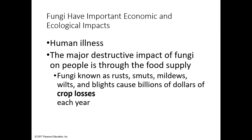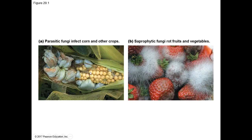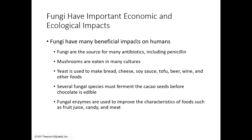Here are some examples of parasitic fungi infecting corn and other crops. Saprotrophic fungi rots fruits and vegetables — for instance, strawberries are really susceptible to this fungi if you don't refrigerate them quickly. In addition to all of those negative things, there are also positive economic and ecological impacts on humans from fungi.